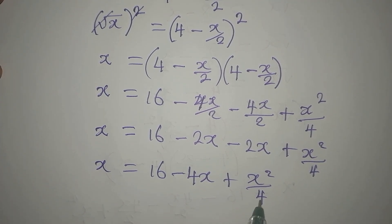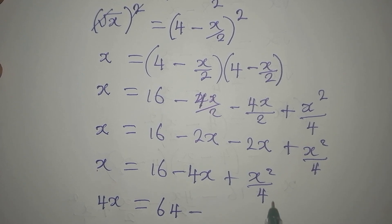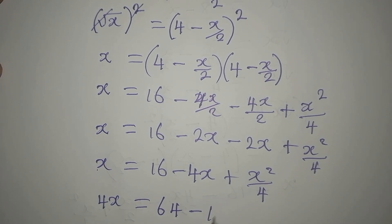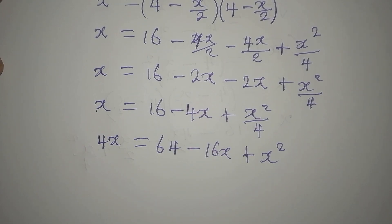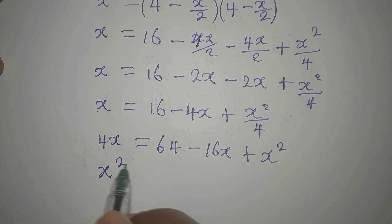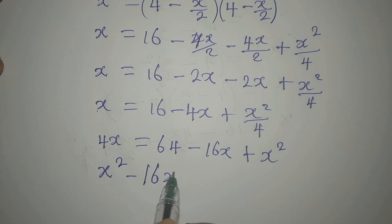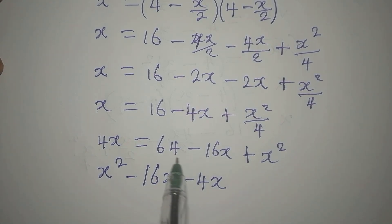The next step is to clear the fraction by multiplying every term by 4. So 4x = 64 - 16x + x². We then rearrange: x² - 16x - 4x + 64.